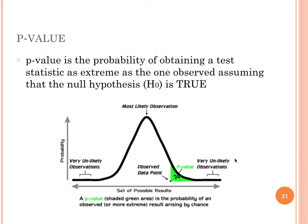A p-value is the probability of obtaining a test statistic as extreme as the one that is observed, assuming that the null hypothesis is true. There are a lot of implications in using p-values. Getting an extreme p-value that allows us to reject the null hypothesis does not mean that a non-extreme p-value allows us to accept the null hypothesis. The absence of evidence is not an evidence of absence.